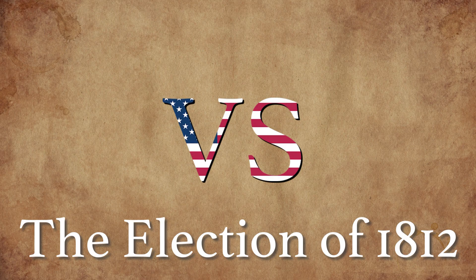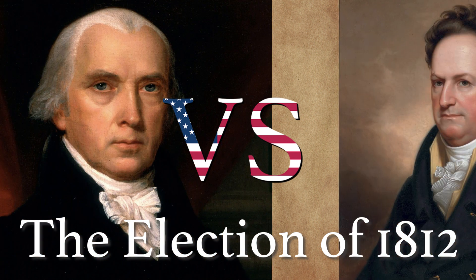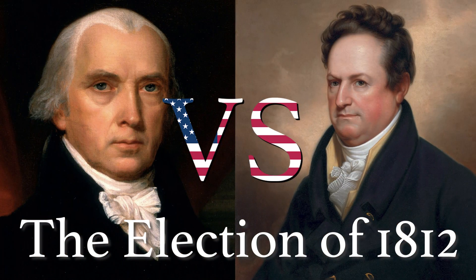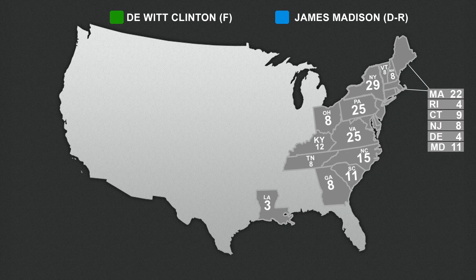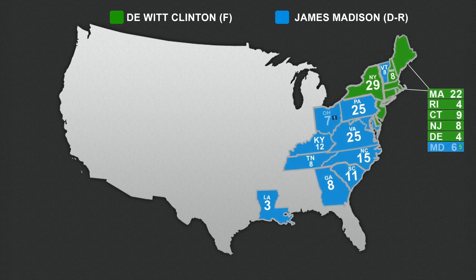The election of 1812: James Madison vs. DeWitt Clinton. This was the first presidential election that took place during a war — the War of 1812. It featured incumbent Democratic-Republican President James Madison against dissident Democratic-Republican DeWitt Clinton, nephew of Madison's late Vice President. The Federalist opposition threw their support behind Clinton, showing how few options they had. It didn't really matter though — Madison was easily re-elected.